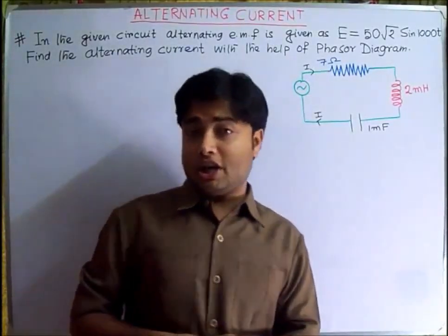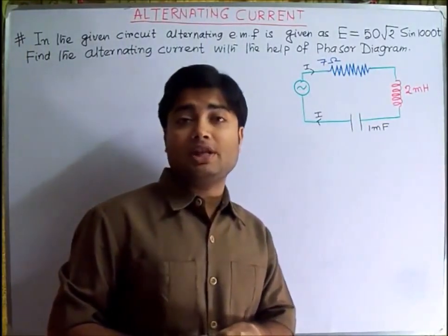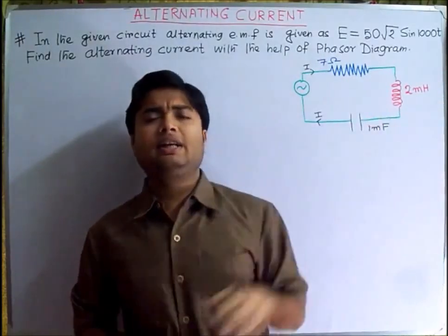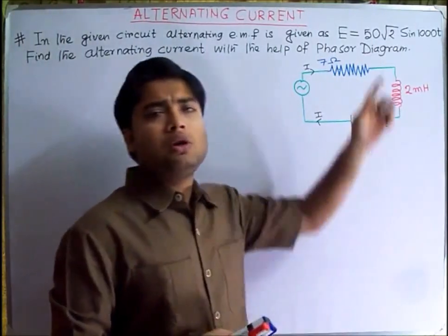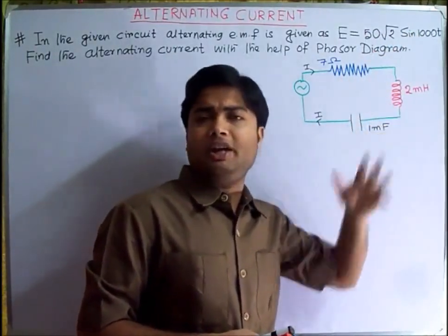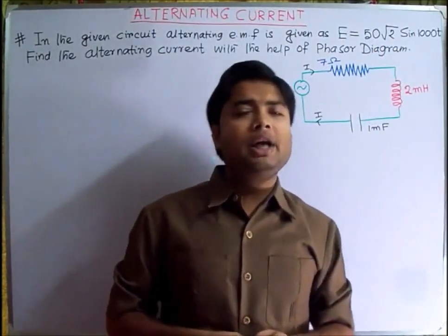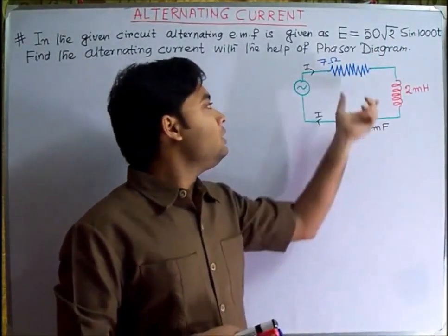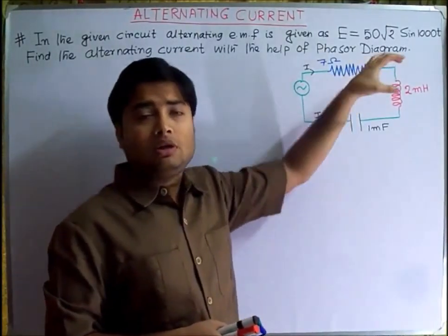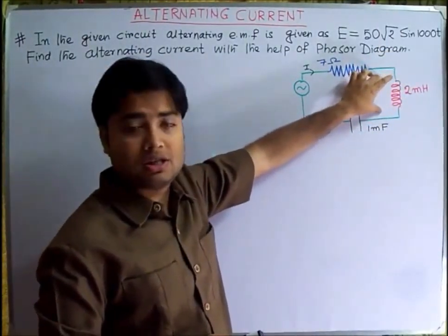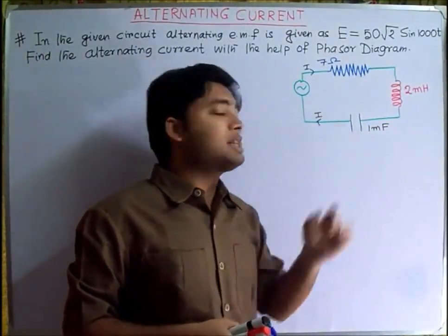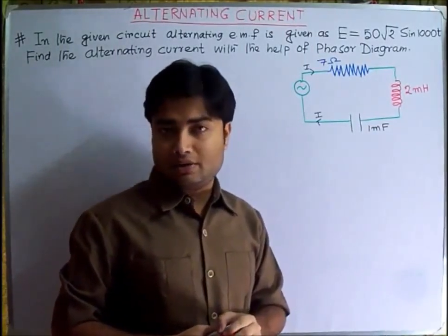Hello and welcome to today's physics lecture, wherein we shall be understanding the phasor diagram with the help of a numerical. Observe in the given circuit: the alternating EMF is equals to 50 root 2 sine 1000t. We need to find out the value of the alternating current. The resistance is 7 ohm, the inductor is 2 millihenry, and the capacitor is 1 millifarad.